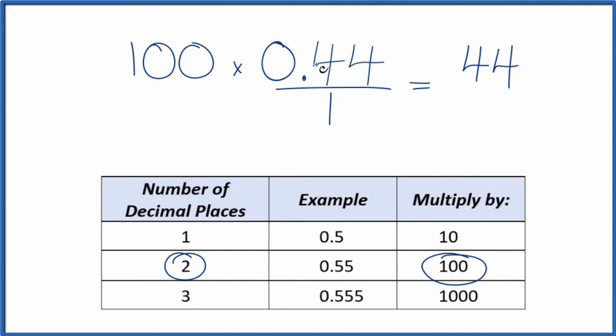But we can't just multiply the numerator by 100. We also have to multiply the denominator by 100. Because 100 over 100, it's just equal to 1. We're not changing the value, just the way it's represented. 100 times 1, that gives us 100.